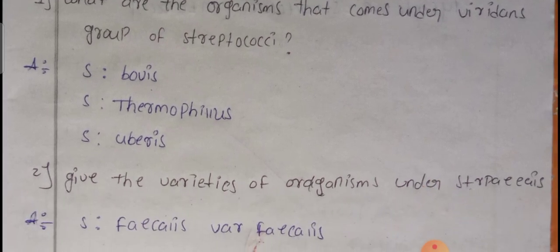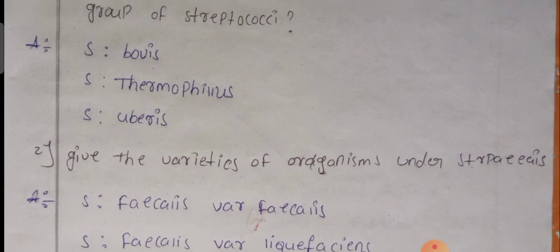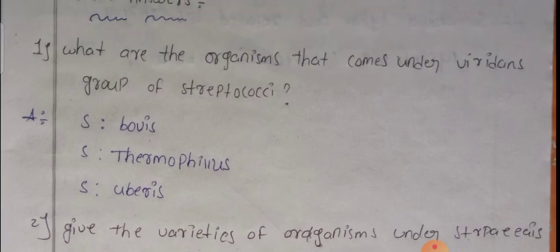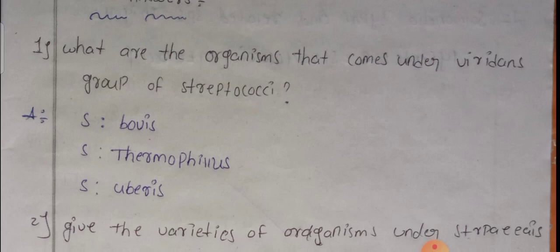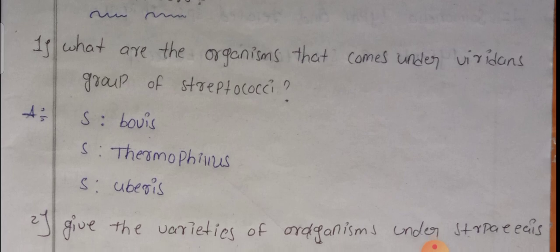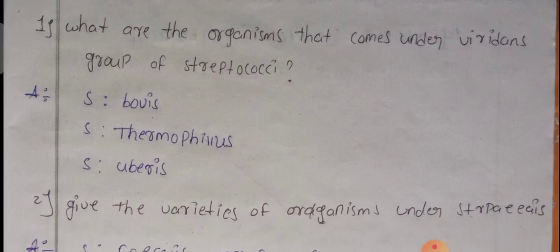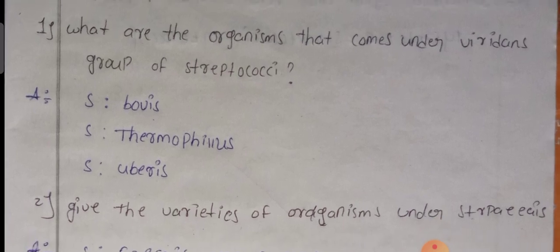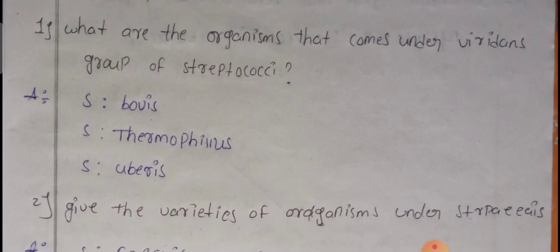The organisms are: Streptococcus bovis and Streptococcus thrombophilus. Sorry — not Salmonella — the correct answer is Streptococcus bovis and Streptococcus thrombophilus under the Pyridans group of Streptococcus.